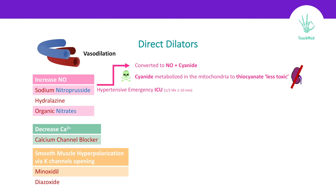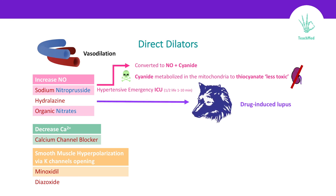For hydralazine, one of the important side effects is drug-induced lupus. Next are calcium channel blockers — we have two families, but the family we're interested in is the dihydropyridines, because they directly vasodilate the vessels, like amlodipine and nifedipine. One of the important side effects is edema, along with palpitations and constipation.